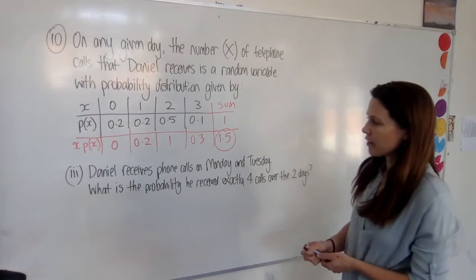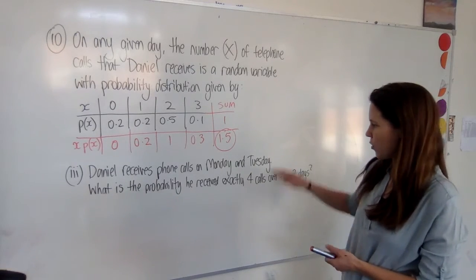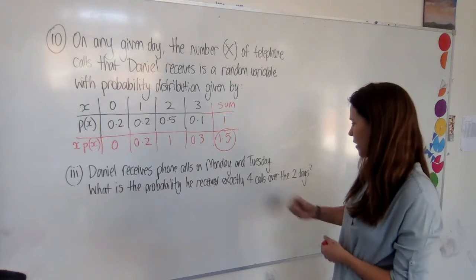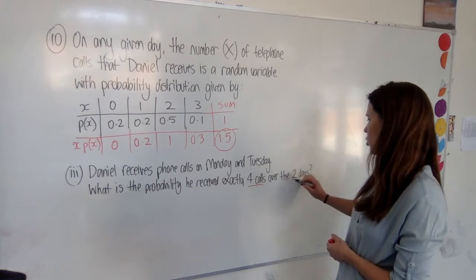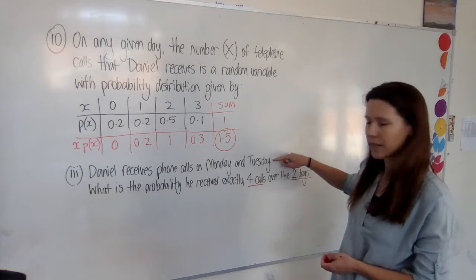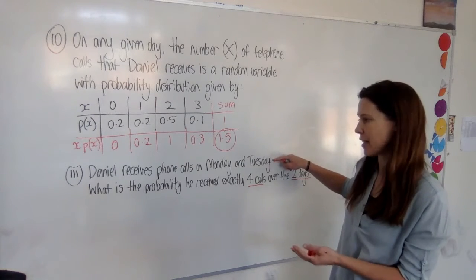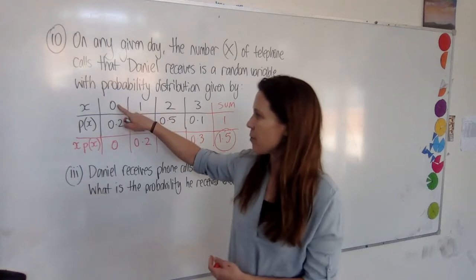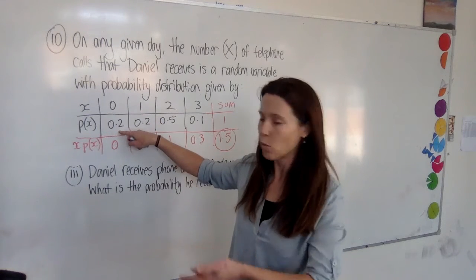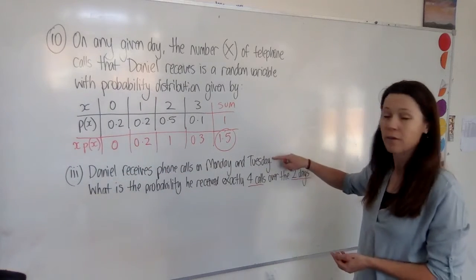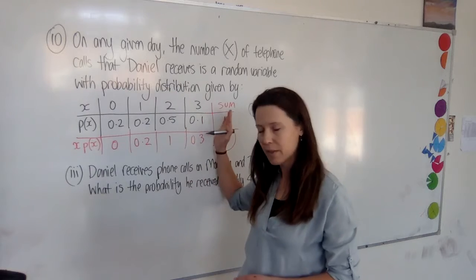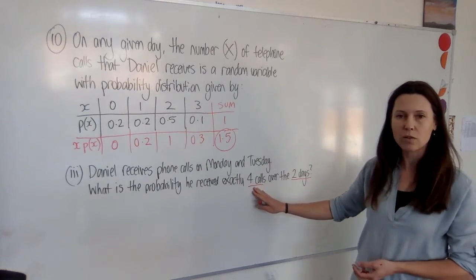Now, part three is quite tricky. Daniel receives phone calls on Monday and Tuesday. What is the probability he received exactly four calls over those two days? Now, this is a conditional probability question. We can tell because they've given us a condition. They've told us that he definitely gets some calls. So we know that some days he doesn't get any calls. This happens 0.2 or two-tenths or one-fifth of the time. So by letting us know that he definitely got some calls, we can tell that that didn't happen. It was definitely one of these things. So what is the chance that he got four calls?